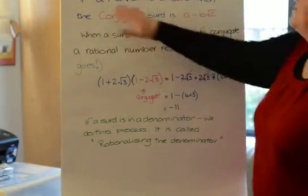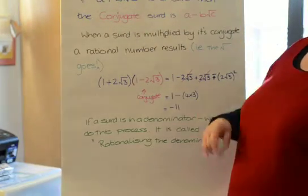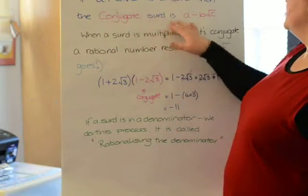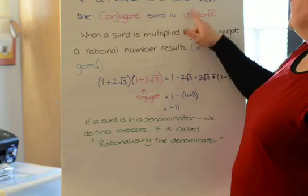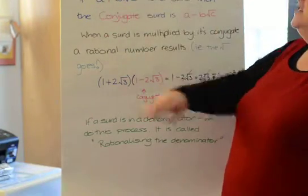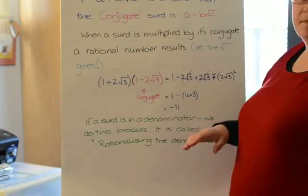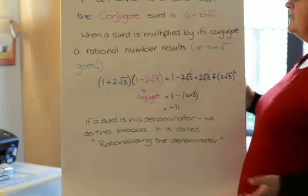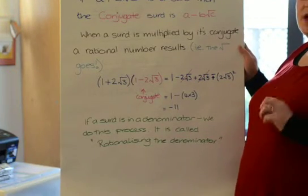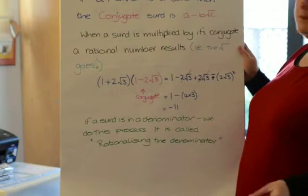Now, we've said that a plus b root c is a surd. And then we talk about the conjugate. And we're going to talk a lot about the conjugate when we come on to complex numbers. But the conjugate surd is basically where that sign is changed. So if it's positive, it goes to negative. If it's negative, it goes to positive. Now, the great thing about the conjugates is that if you multiply a surd by its conjugate, you get rid of the square roots. It becomes a rational number.